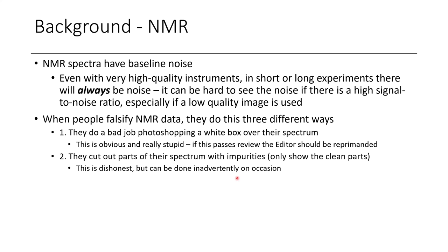The second thing they could do is cut out parts of their spectrum that contain impurities — they only show you the clean part. It's like when you have guests over and you don't show them your bedroom, which is full of all the junk you moved out of the other rooms. This is dishonest in the case of NMR spectra, but it can also happen inadvertently. Sometimes you're supposed to show certain ranges and happen to have an impurity outside that range. This is the type of thing a reviewer could catch and ask you to fix.